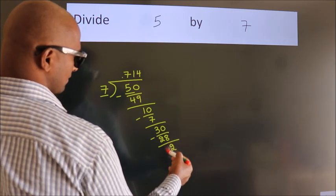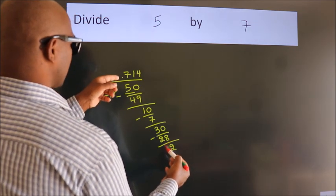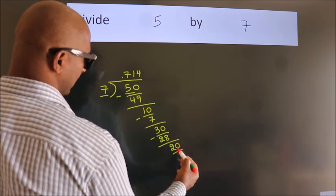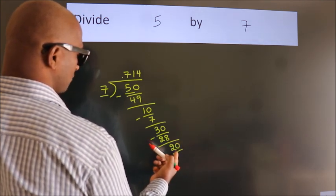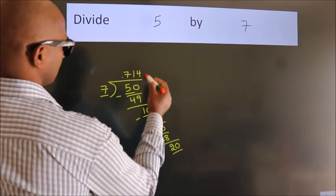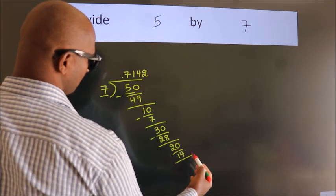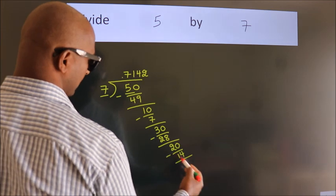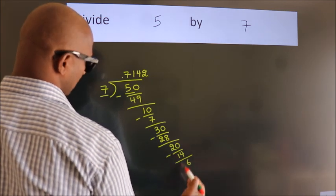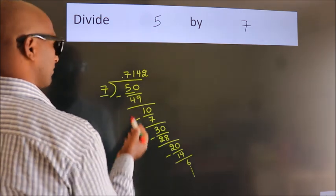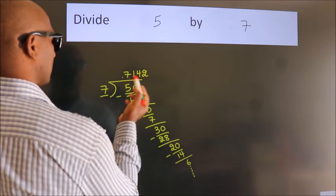We already have the decimal, so directly take 0. So 20. A number close to 20 in the 7 table is 7 times 2 equals 14. Now we subtract and get 6. The division continues, but it is enough if we do up to 4 decimal places.